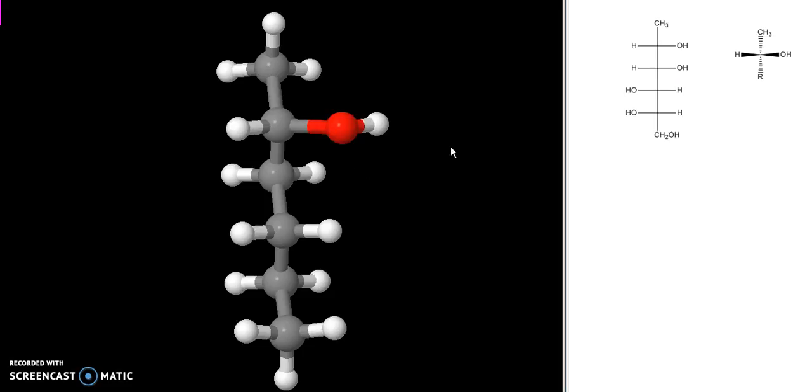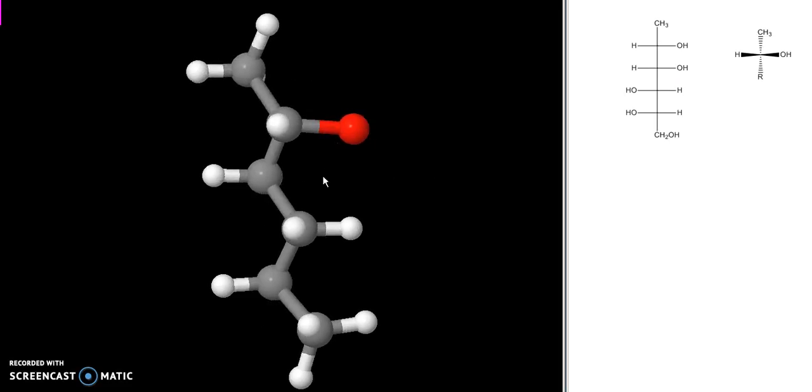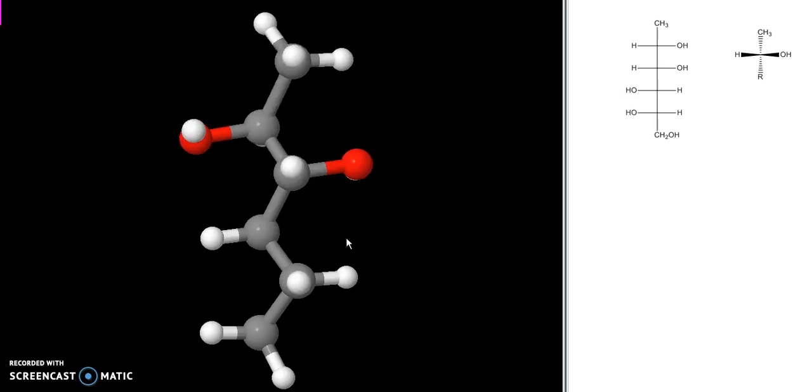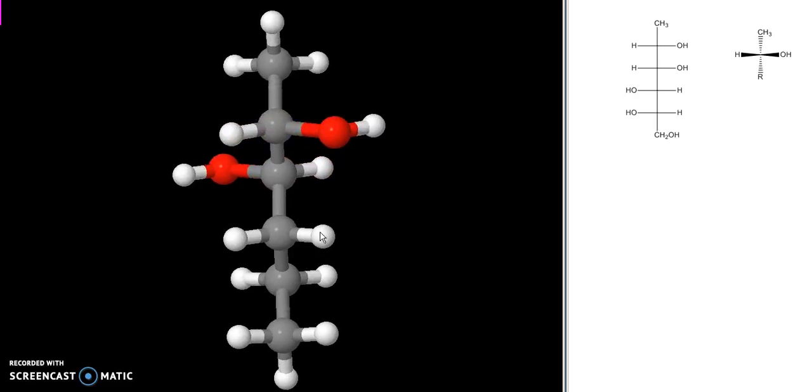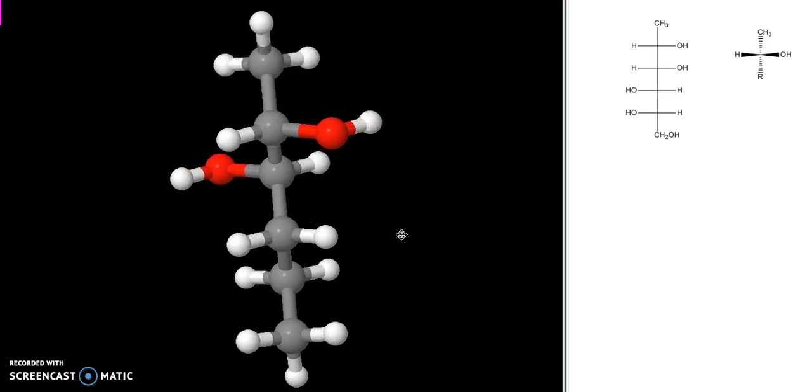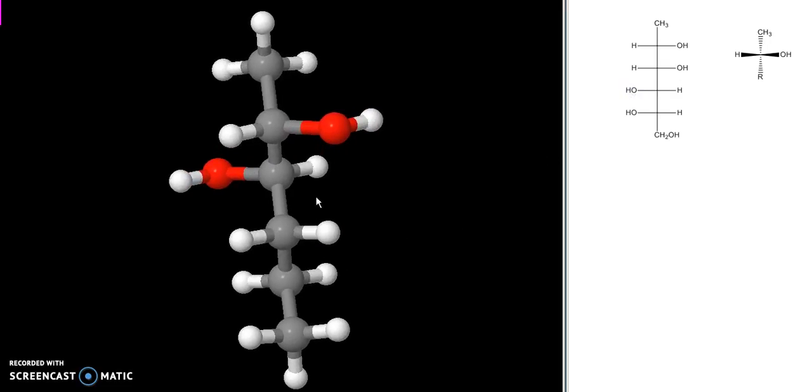Now, moving to the next carbon, I have to rotate the molecule now so that, again, the horizontal groups are coming out towards me. When I do that, the group on the right is, again, an OH. Move to the next one. Rotate it again so that the horizontal groups are facing towards me. The group on the left is an OH.